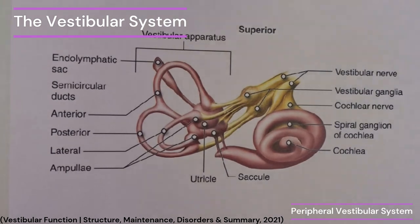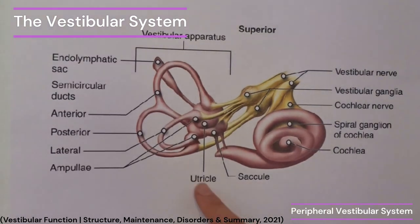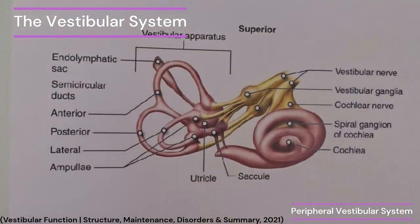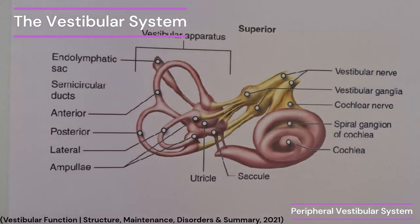The otolith organs — the utricle and the saccule — register linear motion, for example horizontal motion when a car accelerates, or vertical motion when we move up in an elevator.